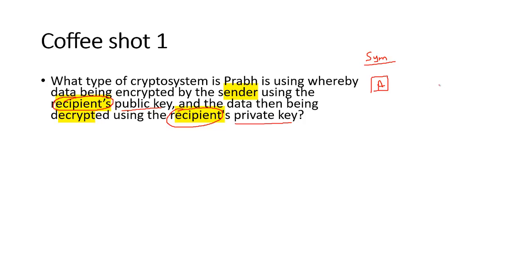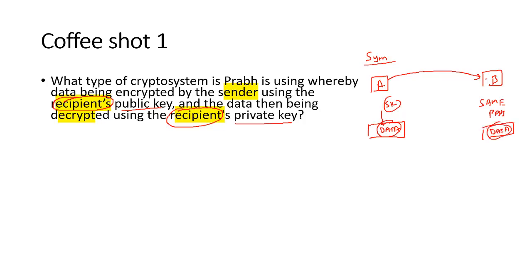In symmetric cryptography, we use the same key. We have System A and System B with data. Data is encrypted by a symmetric key — like a password used to protect the data — and then sent to B. B needs the same password to open it. Always remember: in information security, symmetric cryptography is used for data encryption, and the same key used to encrypt is used to decrypt.